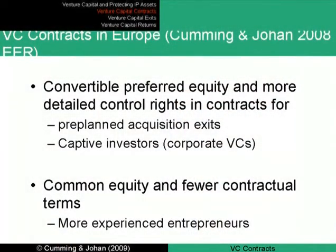These different securities, and how they're used in conjunction with the allocation of control rights, significantly influence the profitability and exit success of the companies that have been backed. In our European data, which includes many investments from Italy and other continental European countries, we see convertible contracts with more detailed control rights — such as the right to replace the founding entrepreneur as CEO — used in conjunction with pre-planned acquisition exits, and more often by corporate venture capitalists.